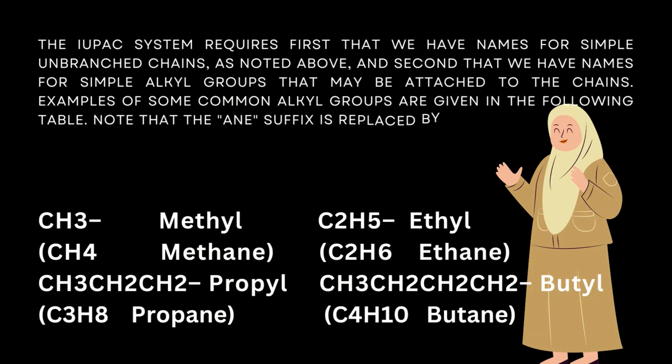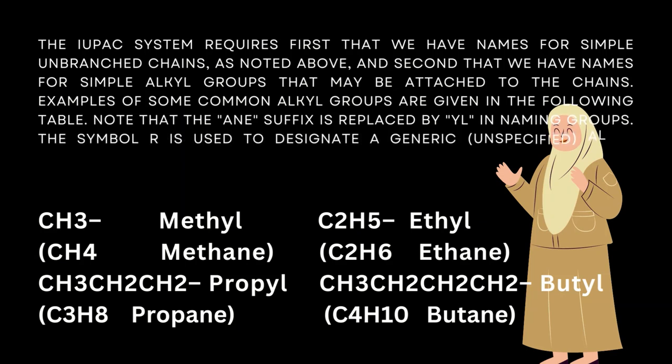The symbol R is used to designate a generic unspecified alkyl group. Examples: CH3 is methyl (from methane CH4), C2H5 is ethyl (from ethane C2H6), CH3CH2CH2 is propyl (from propane C3H8), and CH3CH2CH2CH2 is butyl (from butane C4H10).